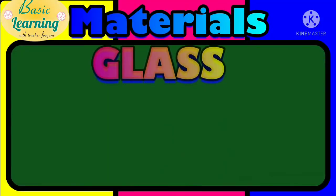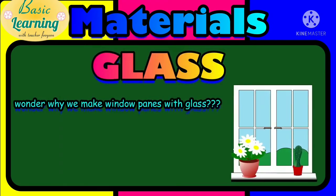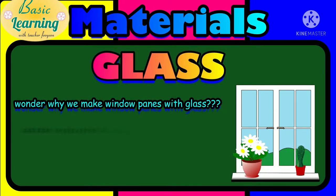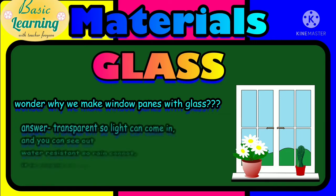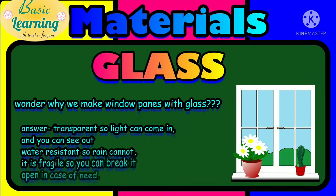Did you ever wonder why we make window panes with glass? The clear answer is that glass is transparent so light can come in and you can see out. It is water resistant so rain cannot go inside. It is fragile so you can break it open in case of need. That is why we use glass in our window pane.